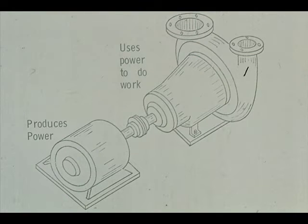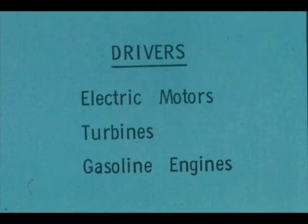Generally, machines that can produce power are made separately from machines that use power to do some form of work. Machines that produce power are called drivers. Examples would include electric motors, turbines, and gasoline engines.